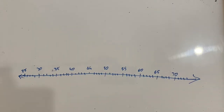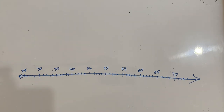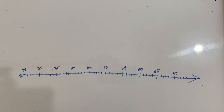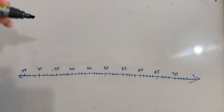This works for any subtraction problem: finding how many I need to add to the smaller number to get to the bigger number, or finding the difference between the number I started with and the number I took away. We can work with bigger numbers, and to track my thinking I'm going to use a number line. Let's try this problem.